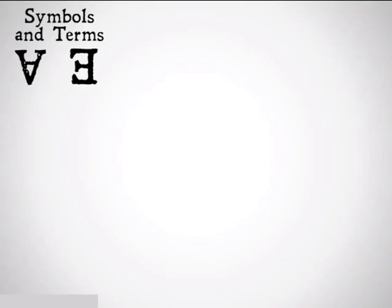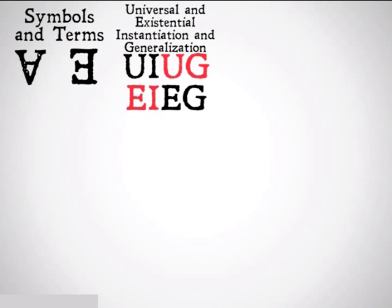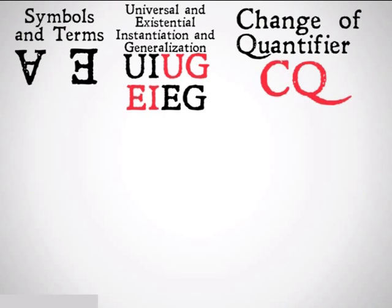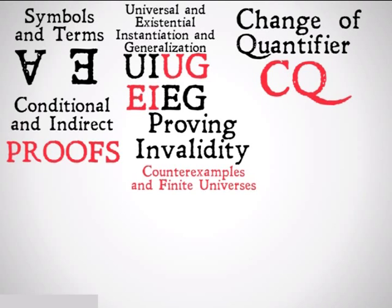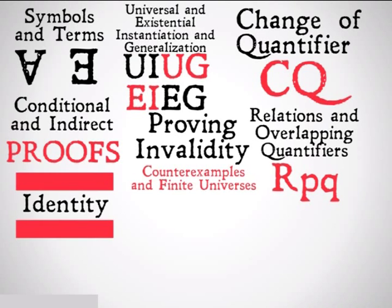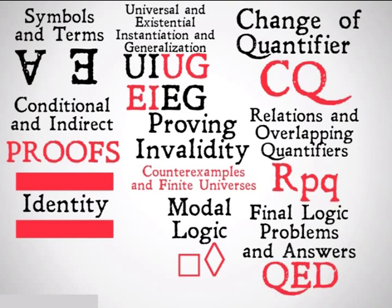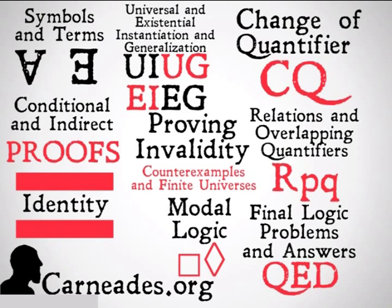That was the symbols and terms we're going to be looking at. There might be one or two more that we throw in as we go forward, but for the most part, that's going to be a comprehensive set of symbols and terms for predicate calculus. Next up, we'll be looking at universal and existential instantiation and generalization, change of quantifier rule, conditional and indirect proofs, proving invalidity, relations and overlapping quantifiers, identity, modal logic, and final logic problems. Watch a new video every single day for 100 days here at Carneades.org. Stay skeptical, everybody.